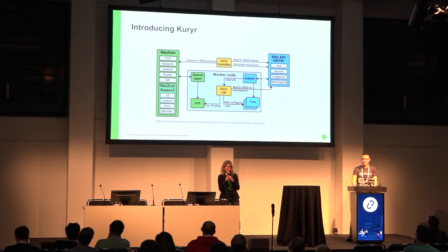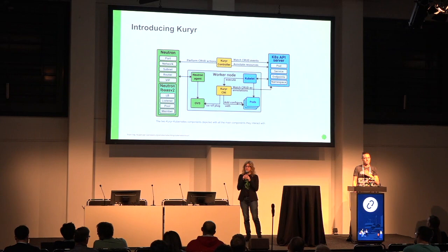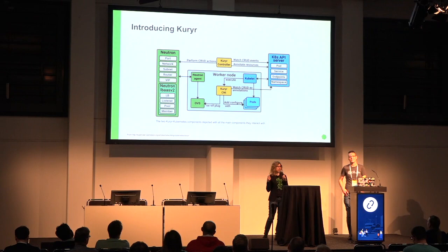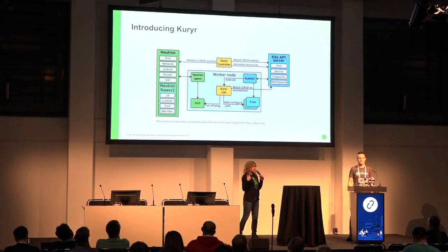A few words about the main components of Kuryr. We have the Kuryr controller that runs on the node where the Kubernetes API is running. Its main task is to watch for every CRUD operation performed through the API and take care of creating the corresponding Neutron resources. For example, you create a pod in Kubernetes and then the Kuryr controller will make sure to create the corresponding Neutron port.